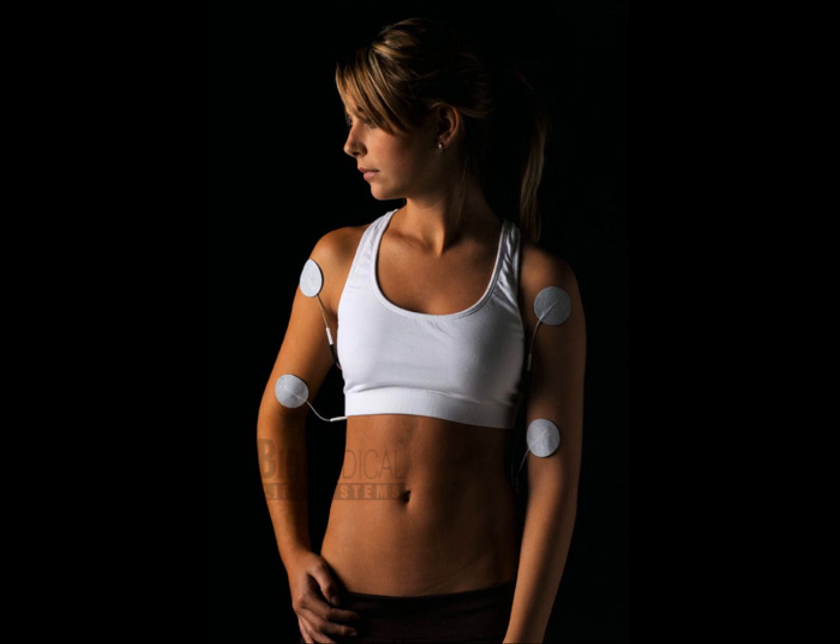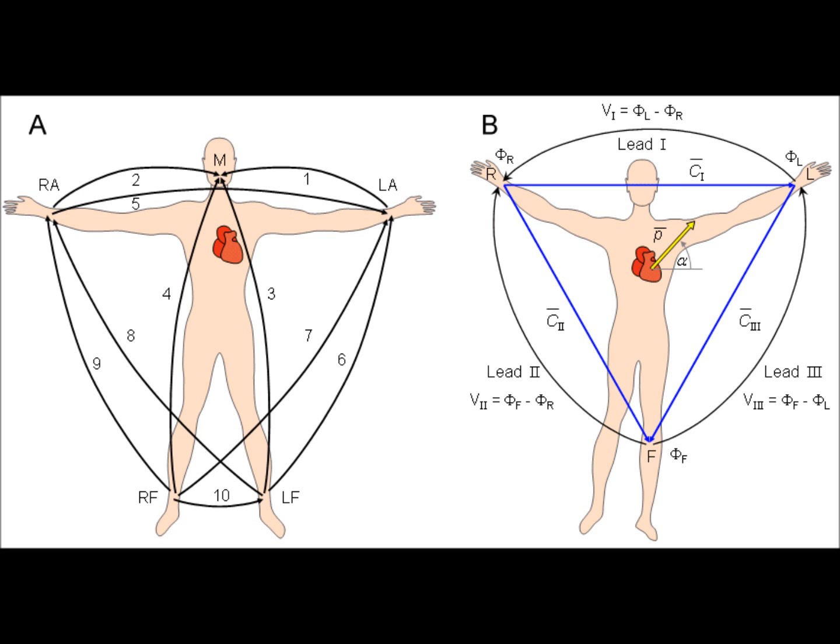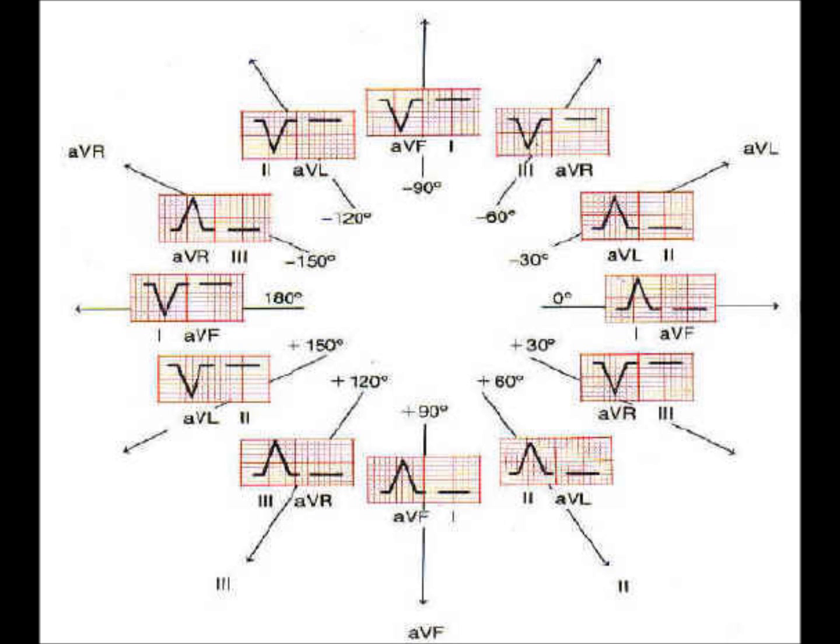A lead records the average current flow at a specific time in a portion of the heart. In the 12-lead ECG, it provides views of the heart in both the frontal and the horizontal planes and views the surfaces of the left ventricle from 12 different angles.